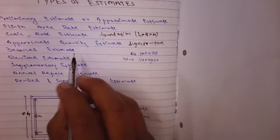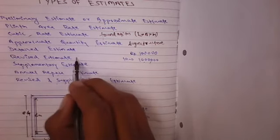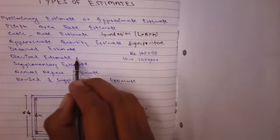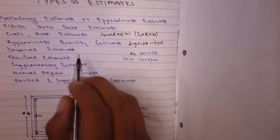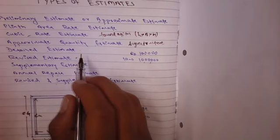And revised estimate: revised estimate is a special type of estimate. If original estimate exceeds by more than 5%, then we will make the revised estimate.